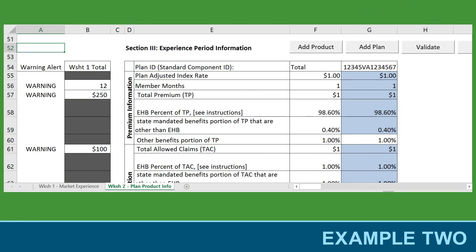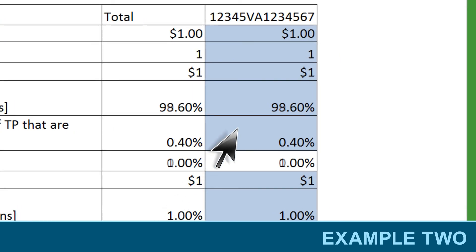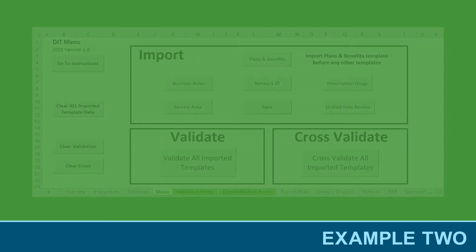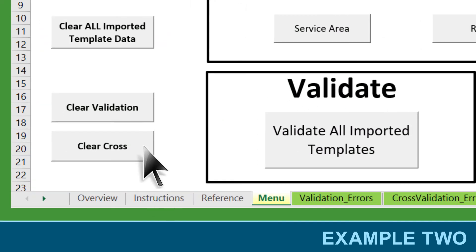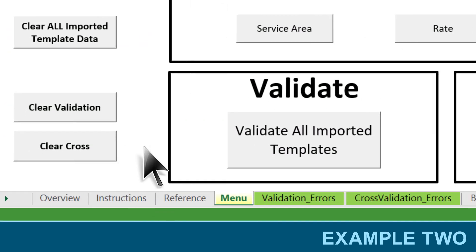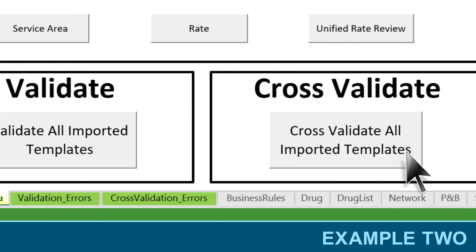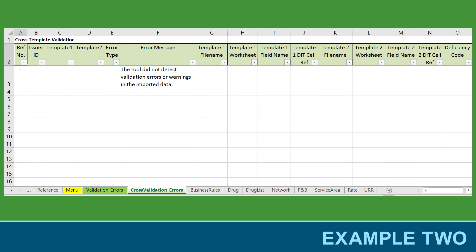Open the URRT, navigate to the worksheet identified by the Data Integrity Tool, and locate and correct the appropriate cell. Save and validate the template and reimport it into the Data Integrity Tool. Click the Clear Cross button to remove old results and click the Cross Validate All Imported Templates button to rerun the review. The Cross Validation Errors tab now shows a message indicating no validation errors were found since the data error was corrected.